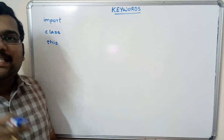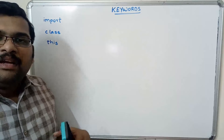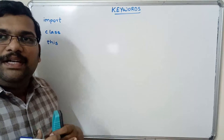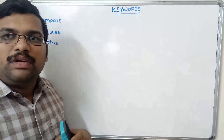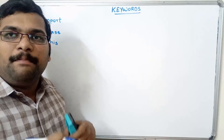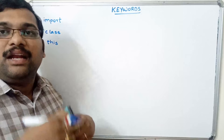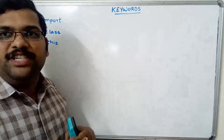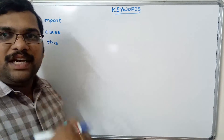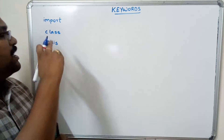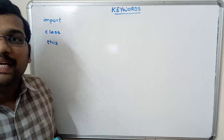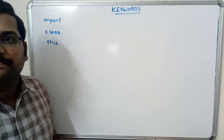The this keyword is used to represent the method belonging to the particular current object. The current object is represented using this.